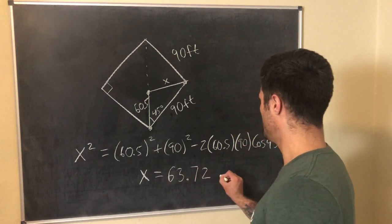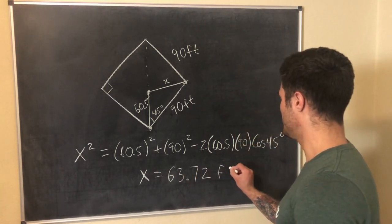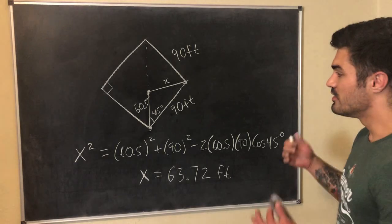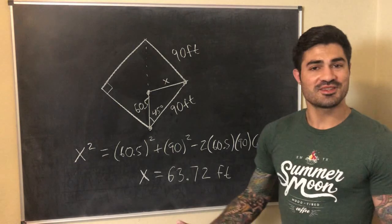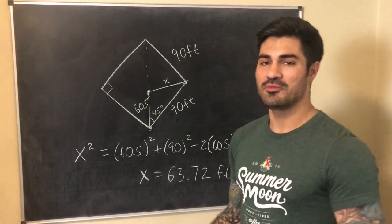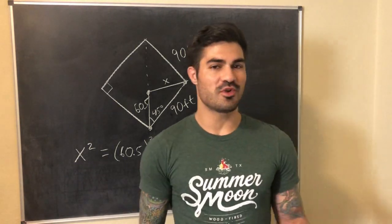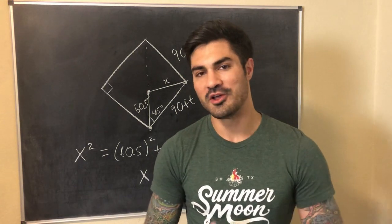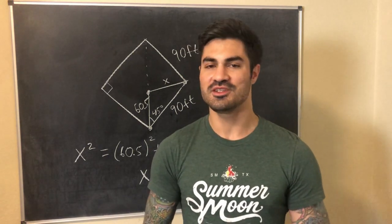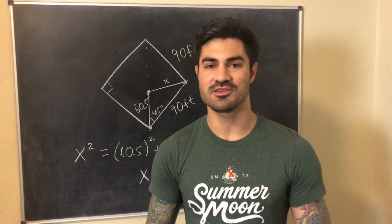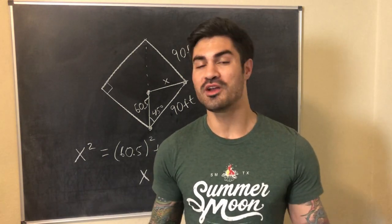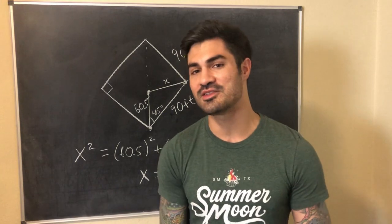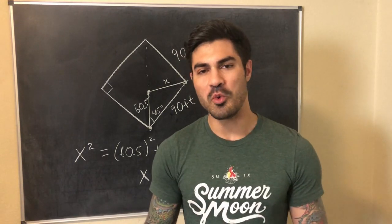The distance from the pitching rubber to first base is 63.72 feet. Hopefully this video helped with word problems involving law of sines and law of cosines. If it did, hit like and subscribe, and leave questions in the comments below.